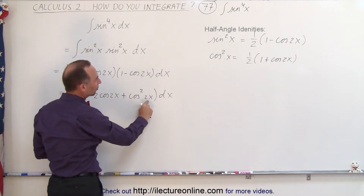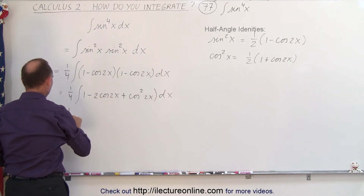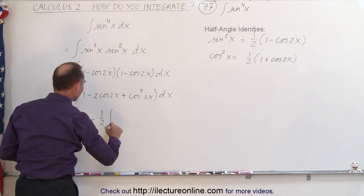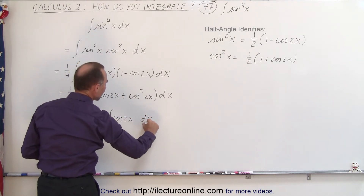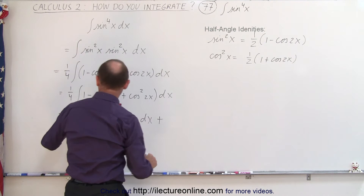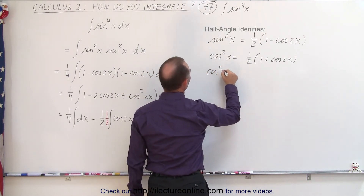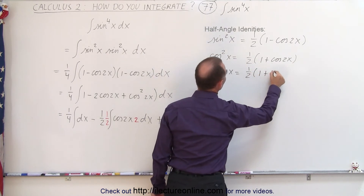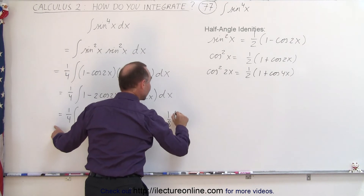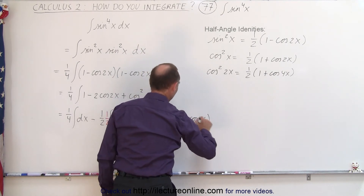We'll use this substitution. Instead of x, we have 2x, so this becomes 1 plus the cosine of 4x. So this equals 1 quarter times the first integral dx, minus 2 times 1 half times the integral of cosine of 2x dx. Notice I left a little bit of room here because we need to find the proper differential. Then finally we have plus 1 quarter times the replacement of cosine squared of 2x, which is 1 half times 1 plus the cosine of 4x. And 1 half times 1 quarter is 1 eighth times the integral of 1 plus the cosine of 4x dx.